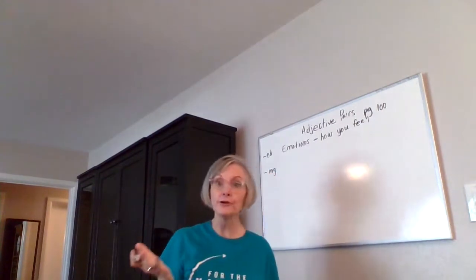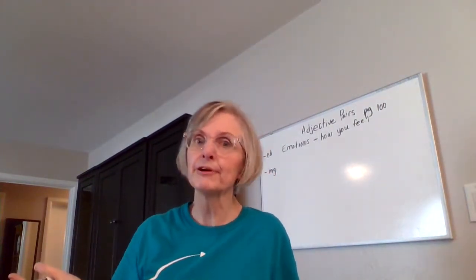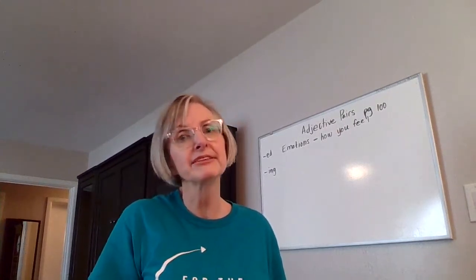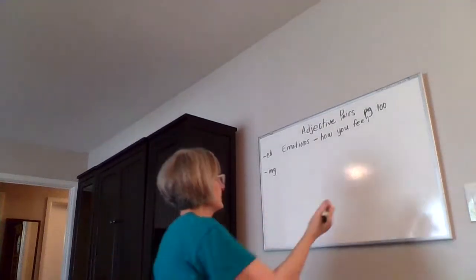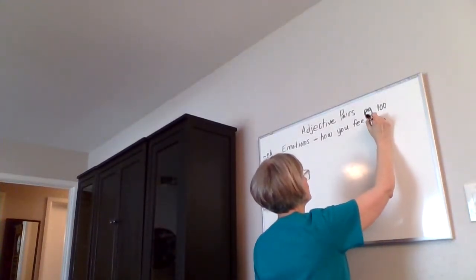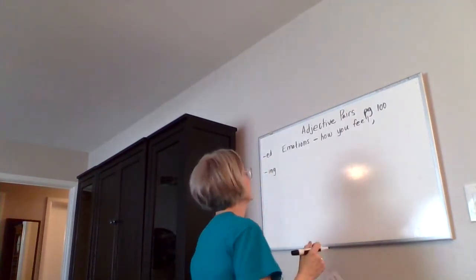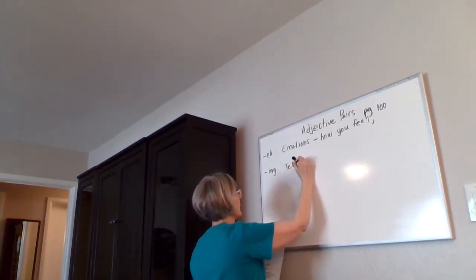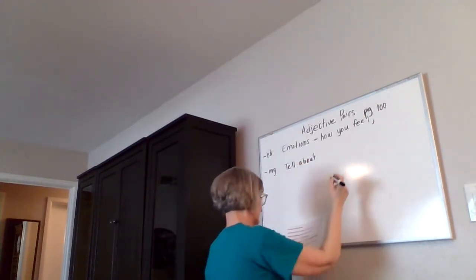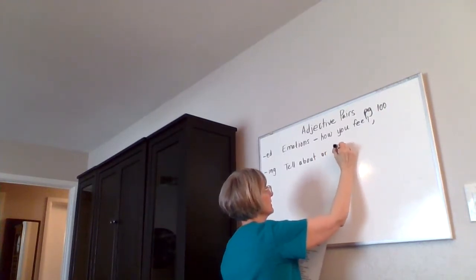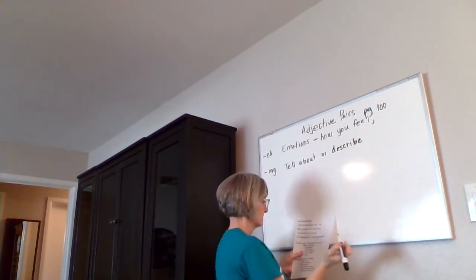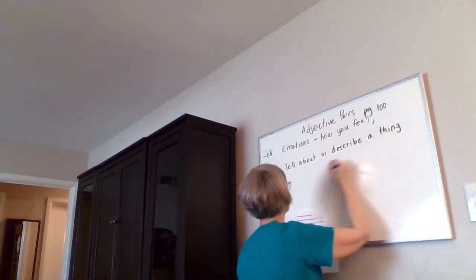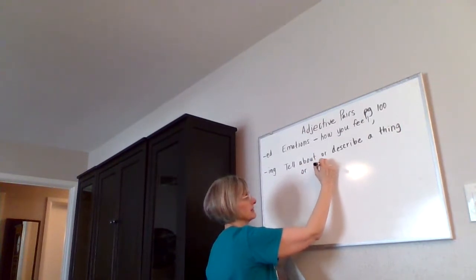So not just how you feel — how another person feels. Remember, people are the ones who have feelings. Things can't have feelings, so these words won't describe things. Maybe animals — maybe we say animals have feelings. So normally people, how you feel. The ones that end in ING, these describe things — or a situation, something that happened or is happening.